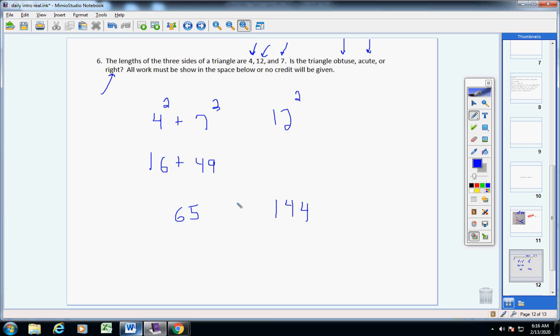If this side over here is less than, if these two numbers squared and added together is less than this over here, if it's less than, then the triangle is always going to be obtuse. Write that down. If this number here is greater than, then the triangle is going to be acute. If they're equal, then the triangle is right. A right triangle.